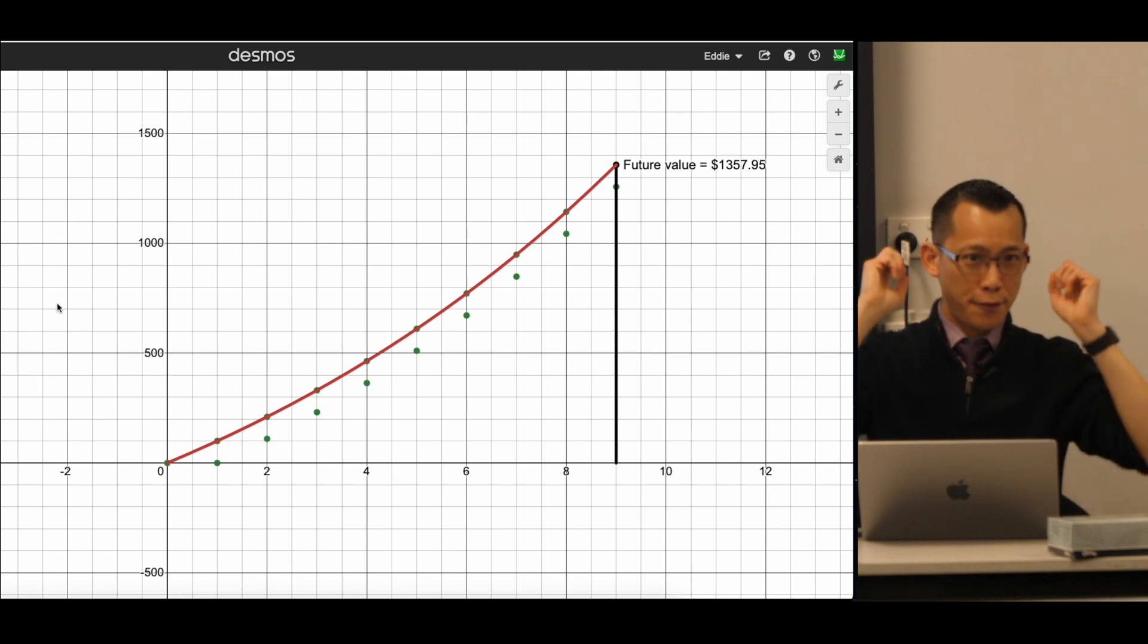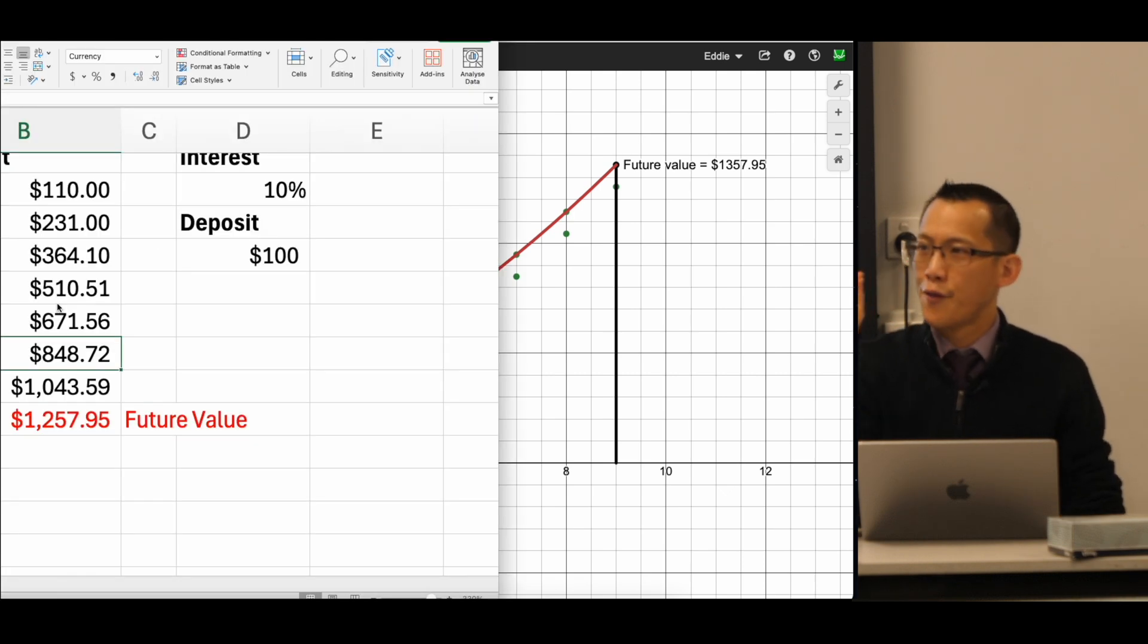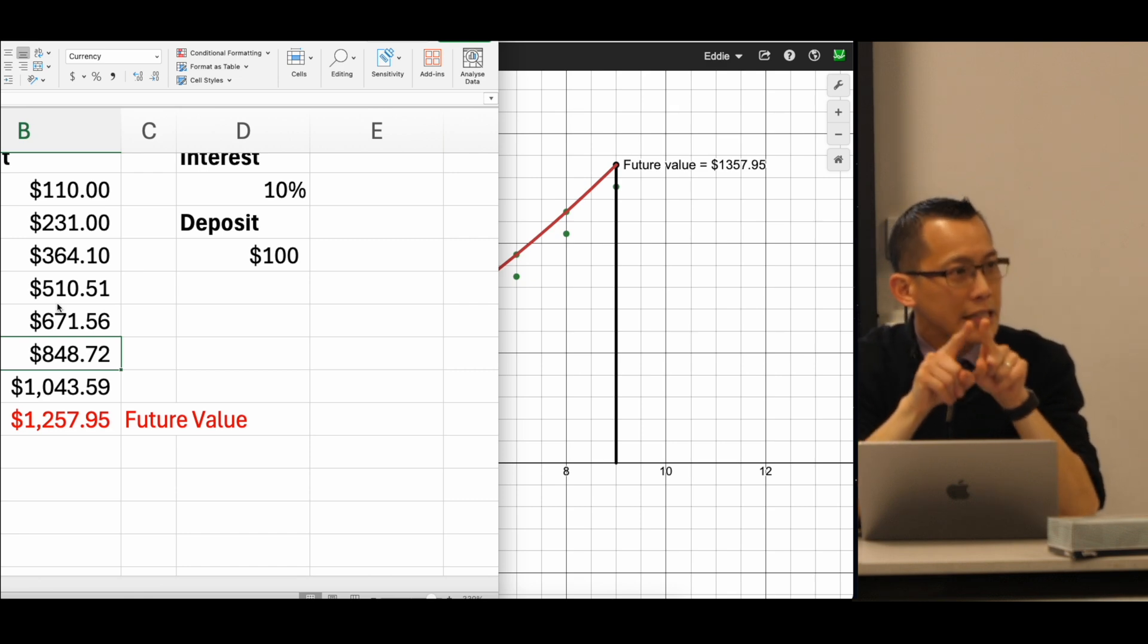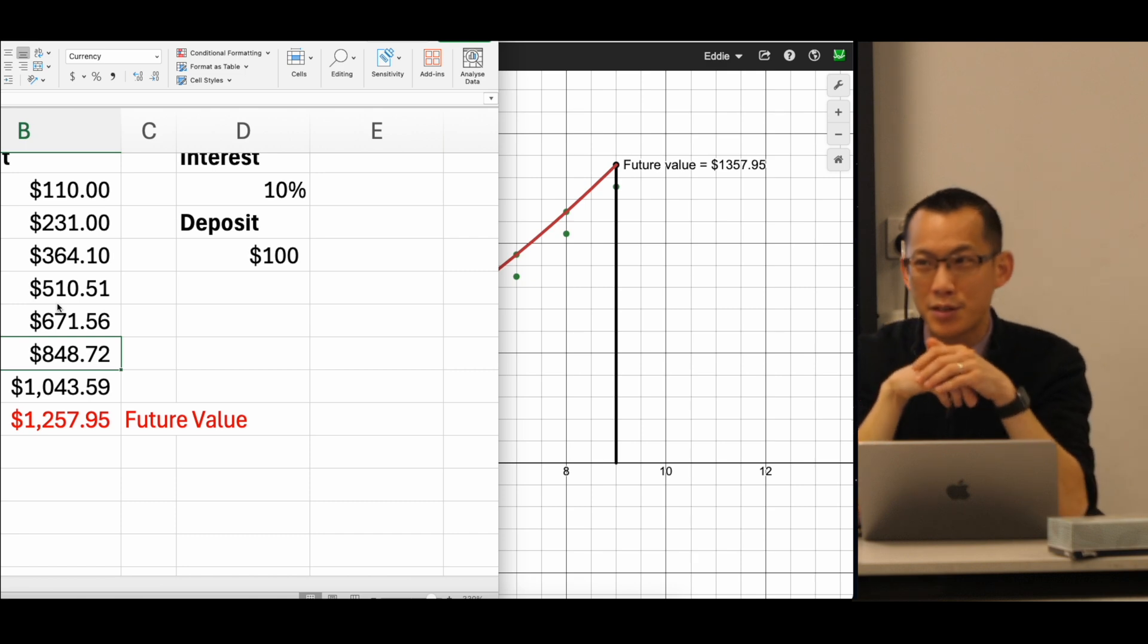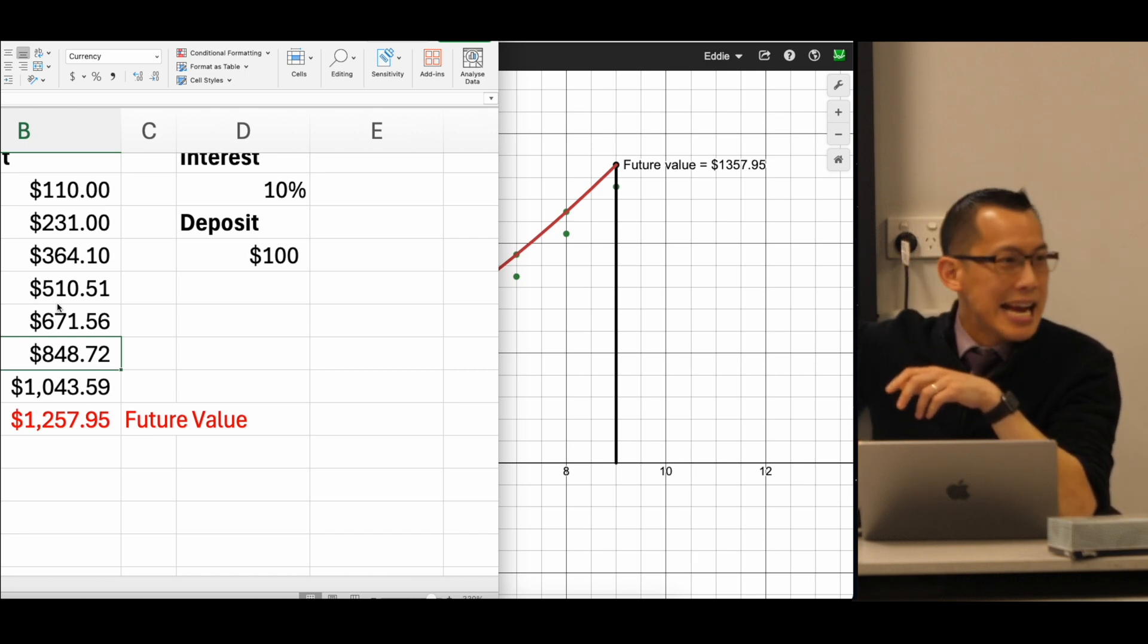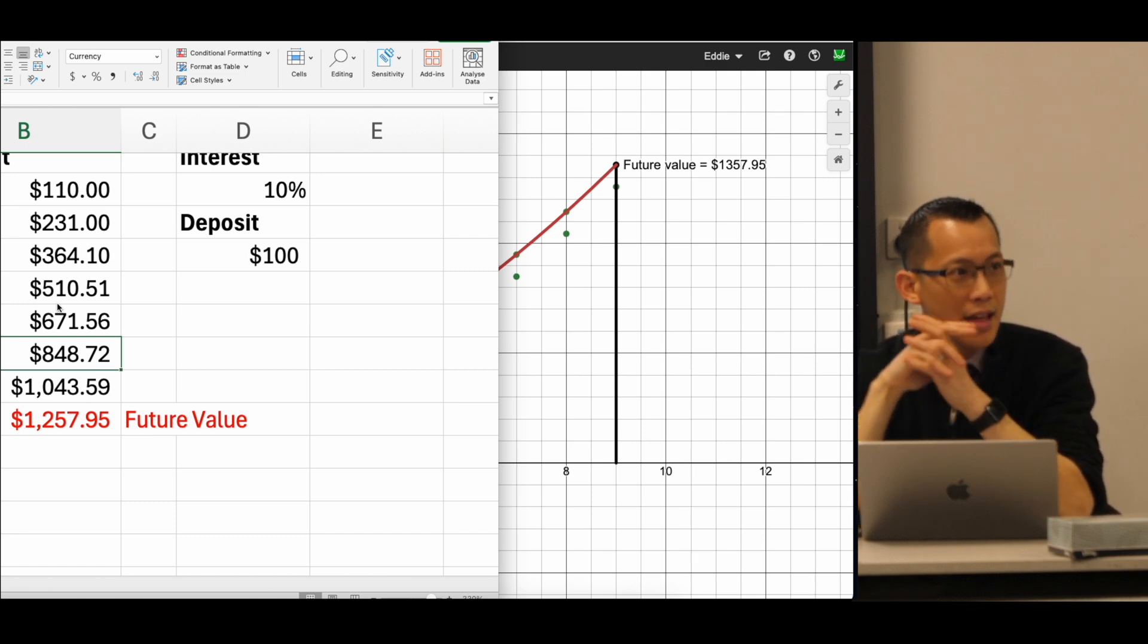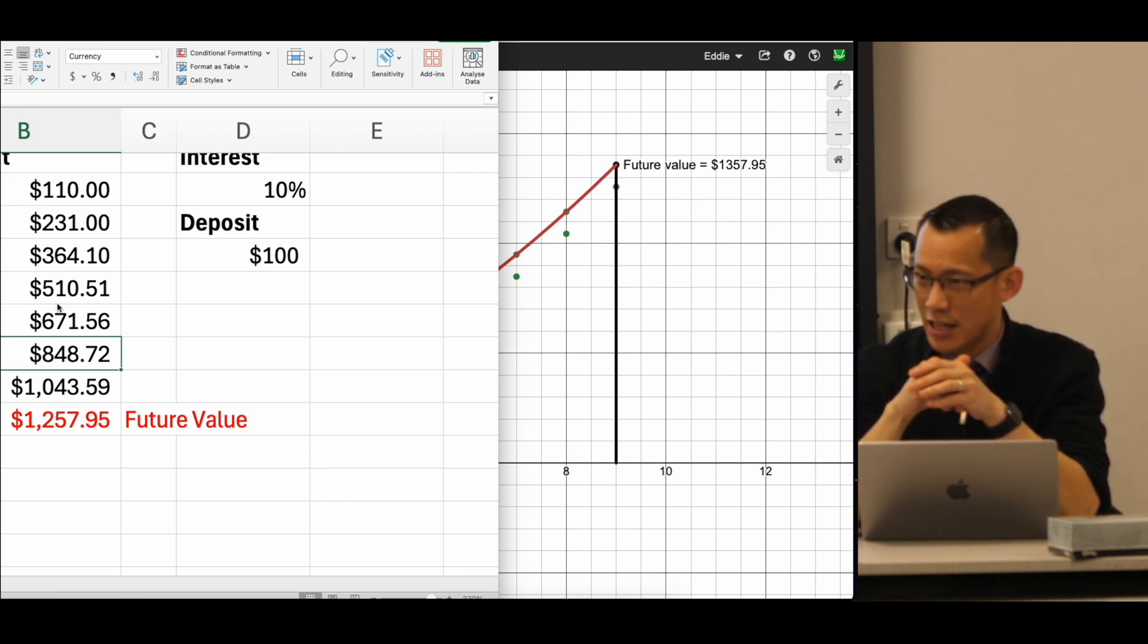Now, future value. Let's go back here. Future value is what's happening at the end here. But there's something really important you need to know. It's exciting looking at that number. You're like, whoa, I'm going to have more than $1,000. But in eight years time, that $1,257, you shouldn't be as impressed by that as the initial number looks.